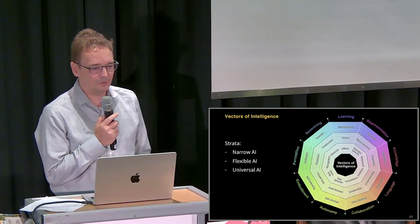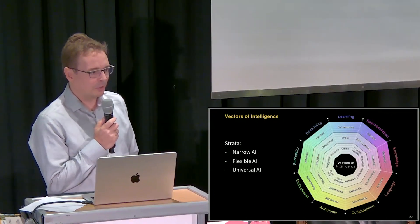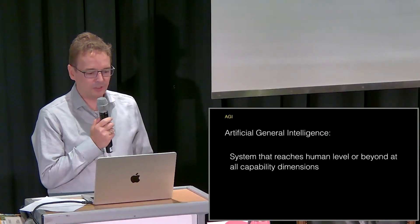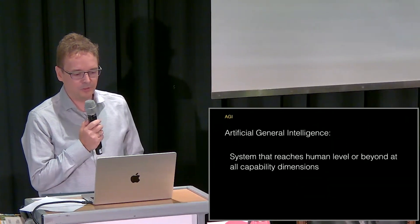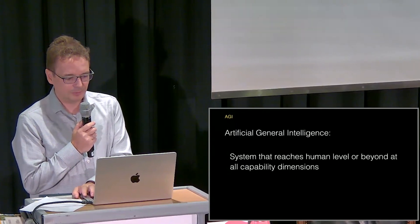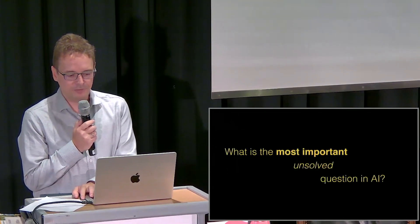And when we look from this perspective, we see that all the existing models that we have in AI are very, very limited. And artificial general intelligence would be a system that reaches beyond or at least to human level in all the relevant capability dimensions. And it's something that gaily we don't have yet.